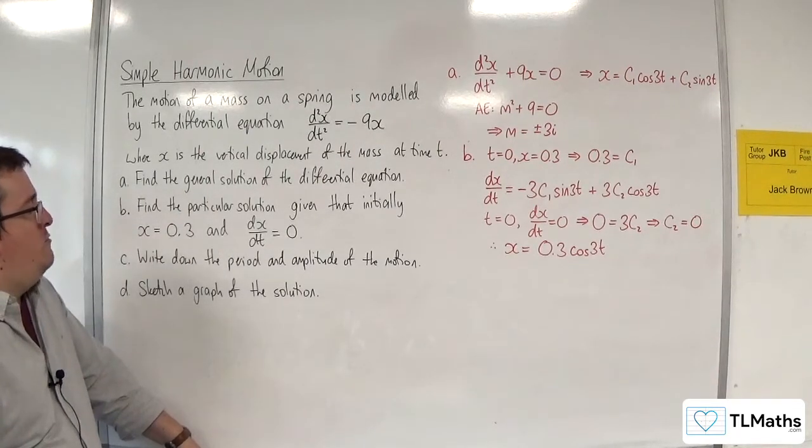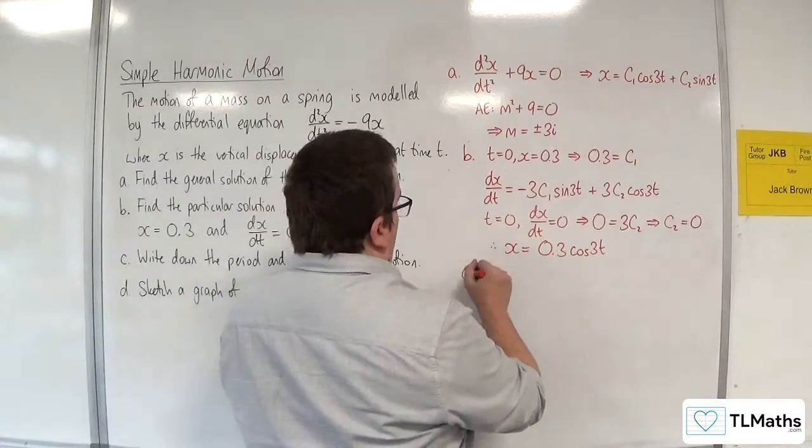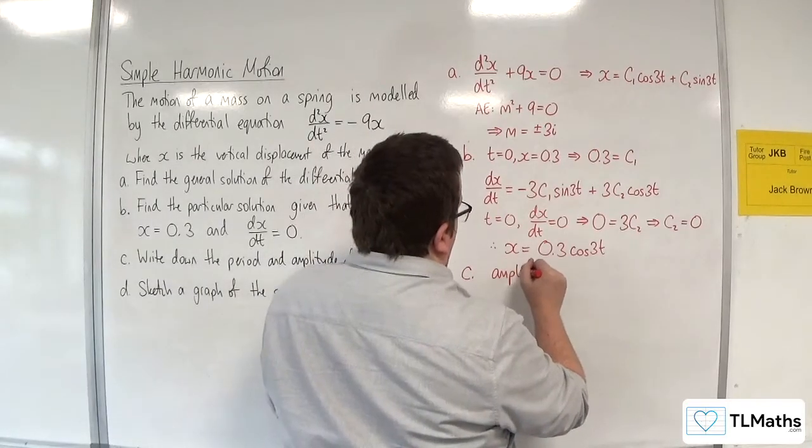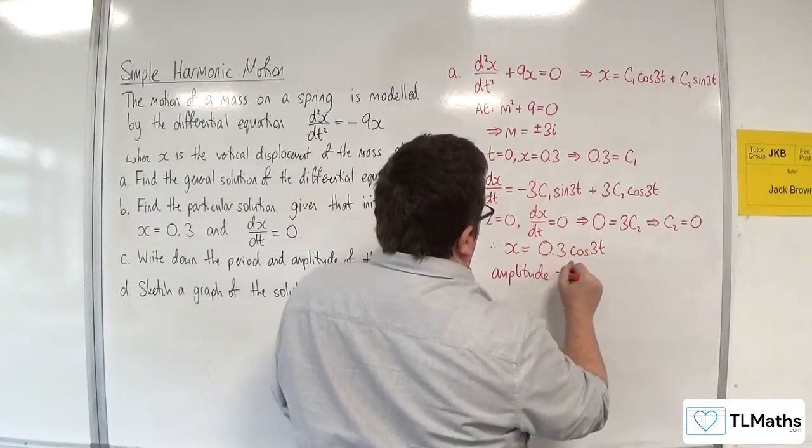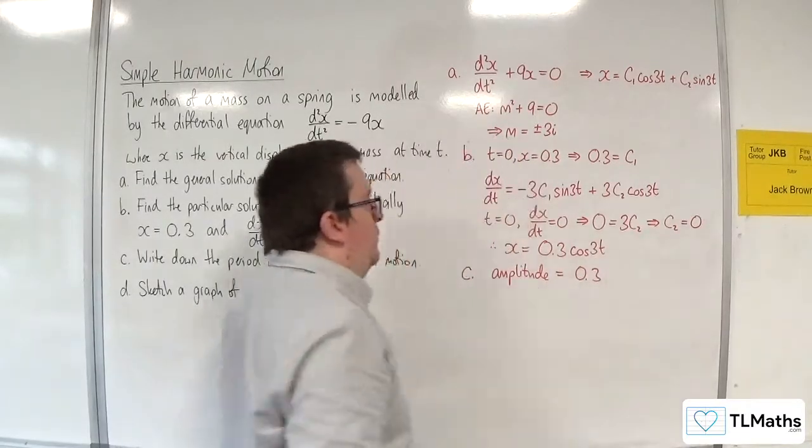Write down the period and amplitude of the motion. So the amplitude is the 0.3, because it's going between minus 0.3 and 0.3.